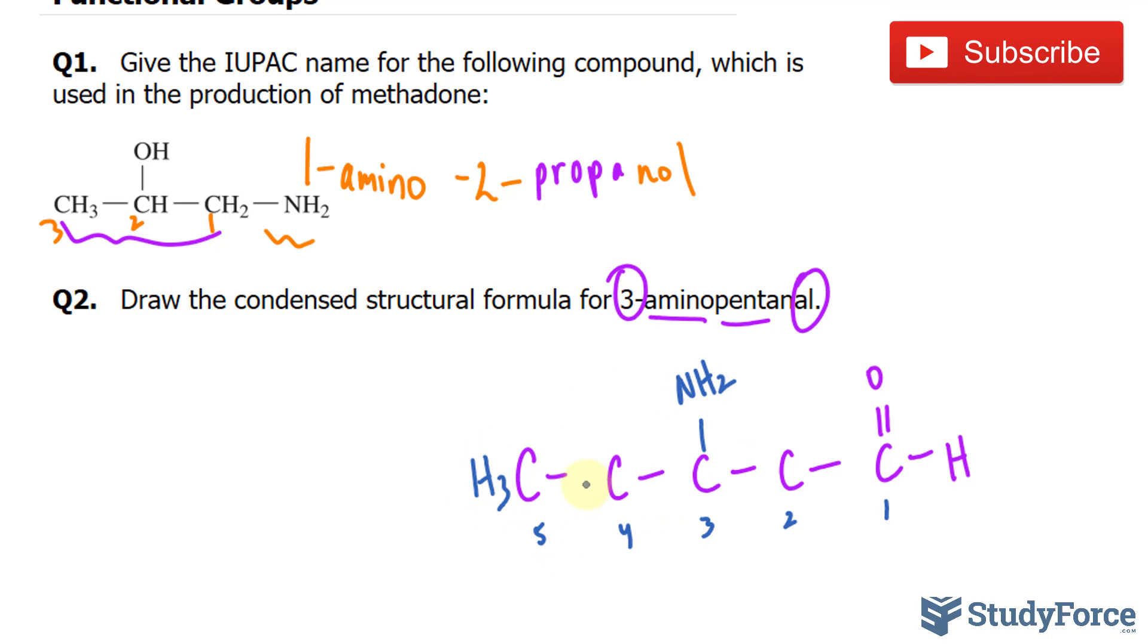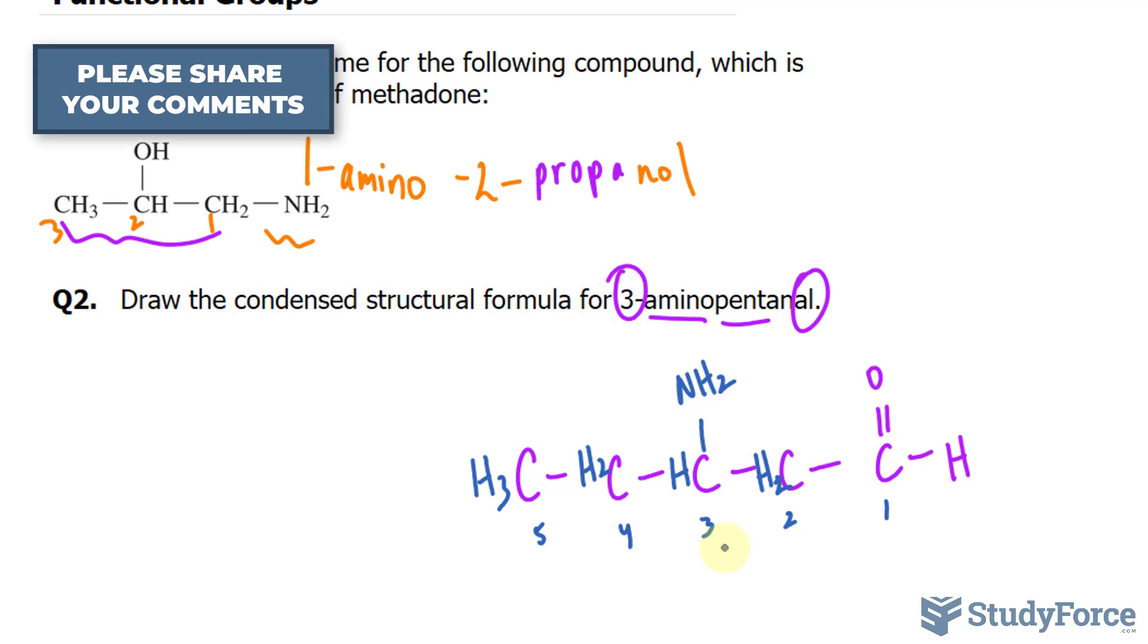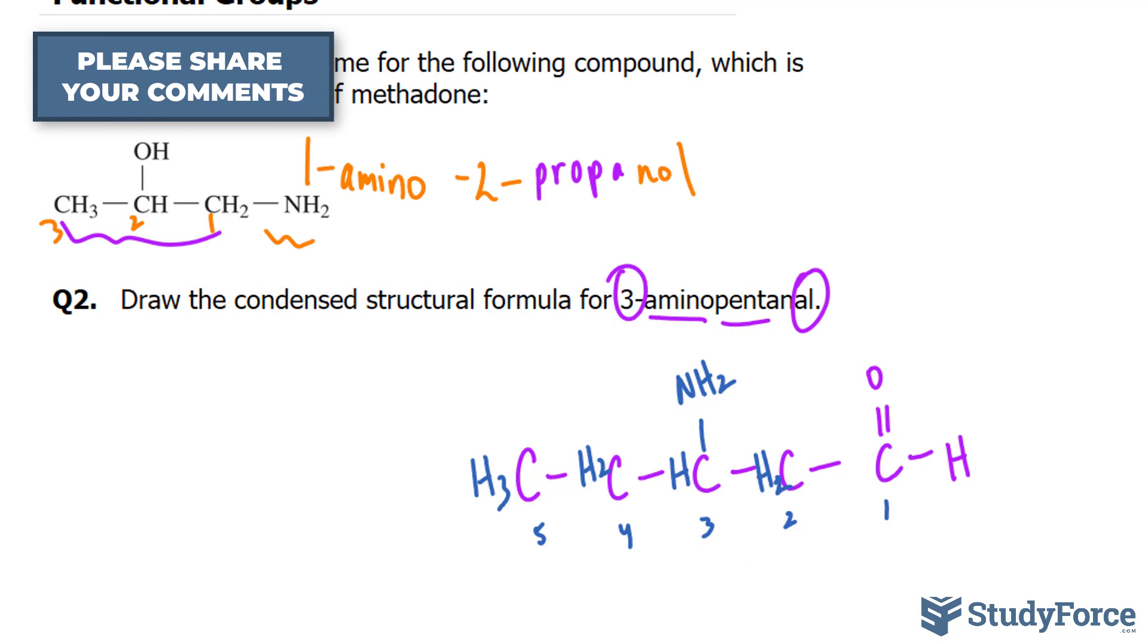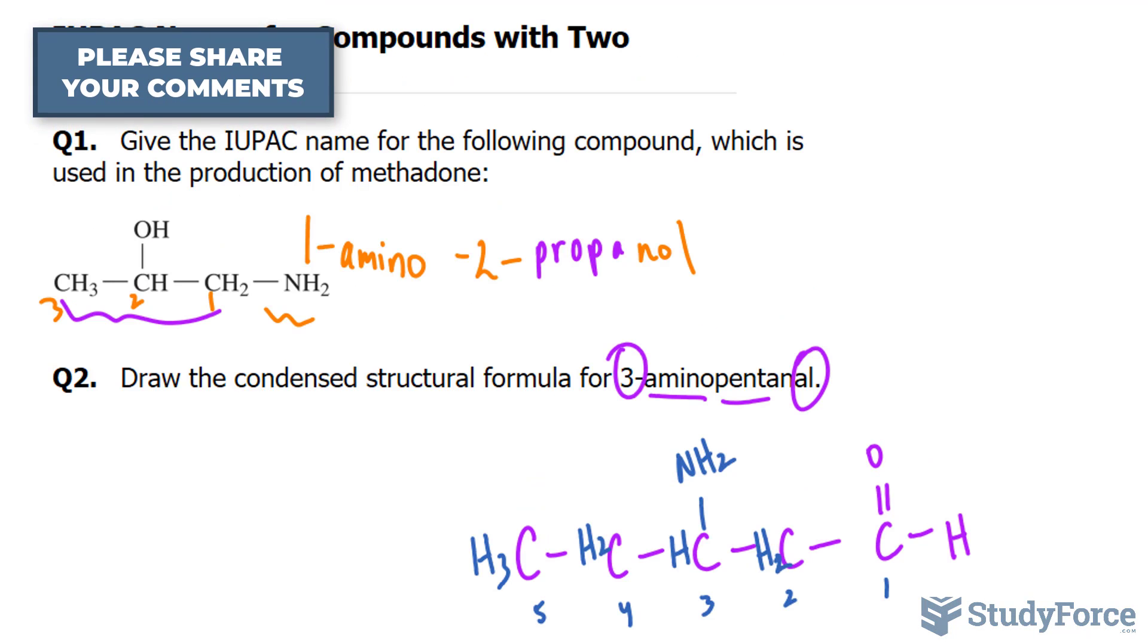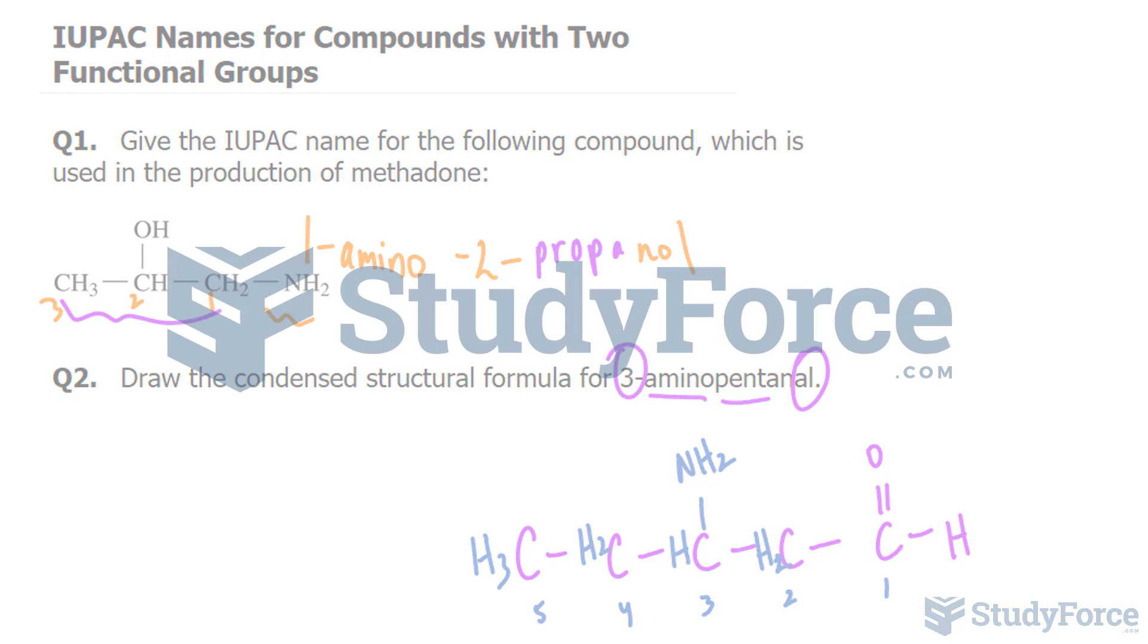Filling in the rest: 3 hydrogens, 2 hydrogens, 1, 2, and we're done. And there you have it. That is how to write the IUPAC name for compounds with two functional groups.